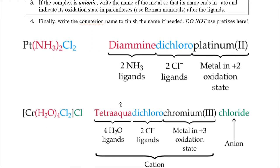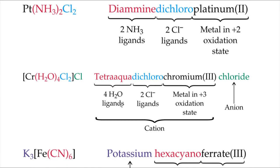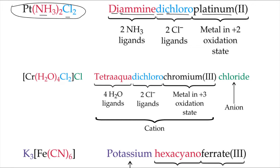Let's look at examples. For the platinum complex — cisplatin — the whole thing is already given as the complex. Make a list: amine starts with A, chloro starts with C, so amine comes before chloro. There are two of each type, so you use di for each: diamine, dichloro. Since this is a neutral compound, you just put the metal name — platinum — and its oxidation state in Roman numerals in parentheses. That gives you diamminedichloroplatinum(II).